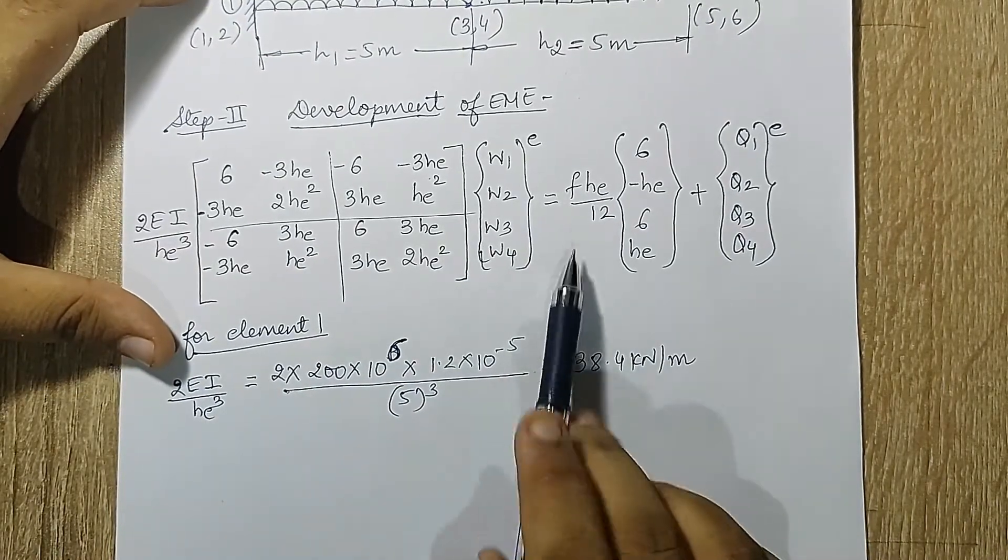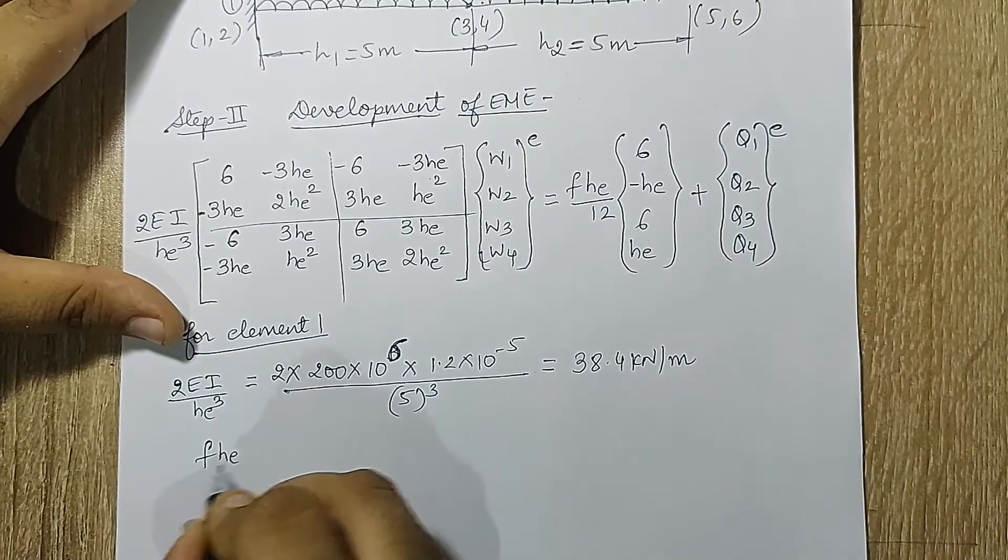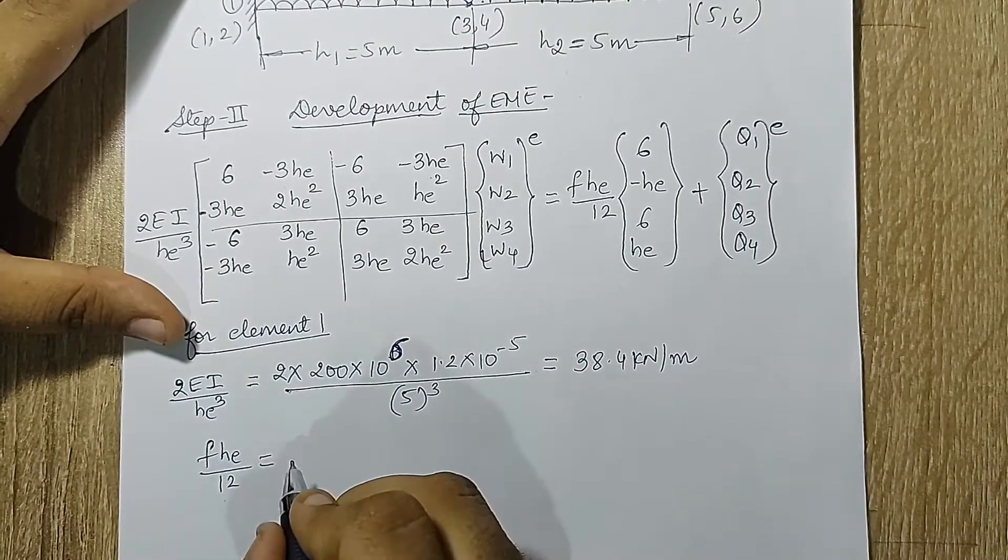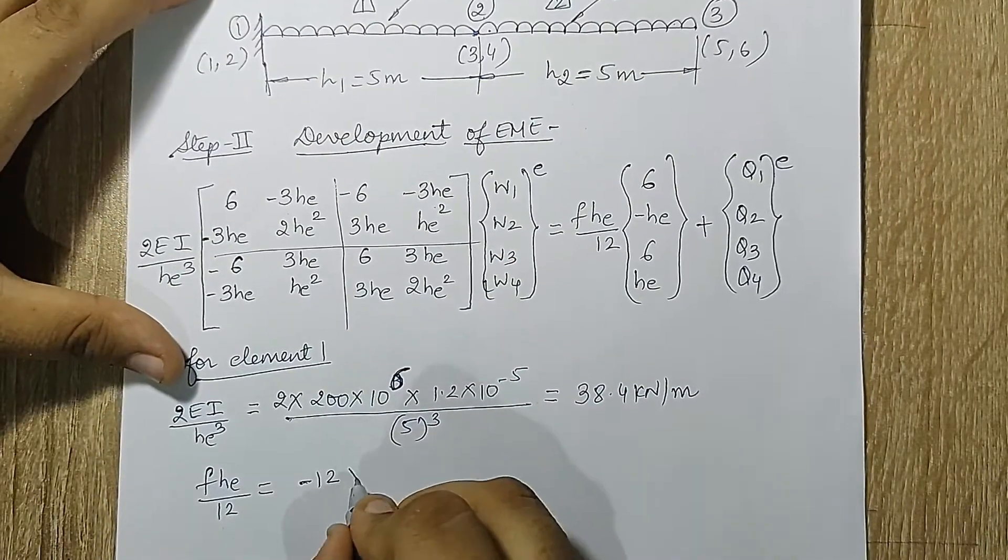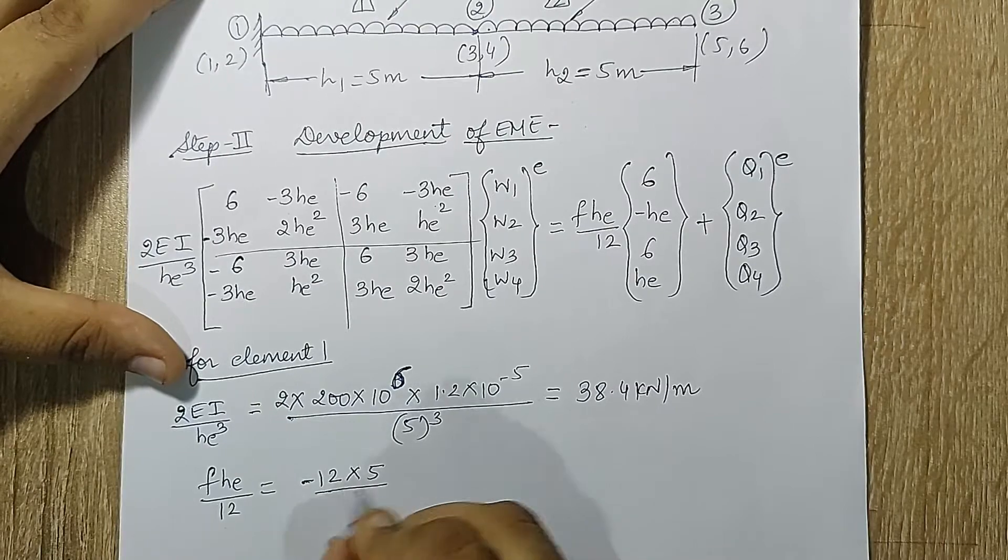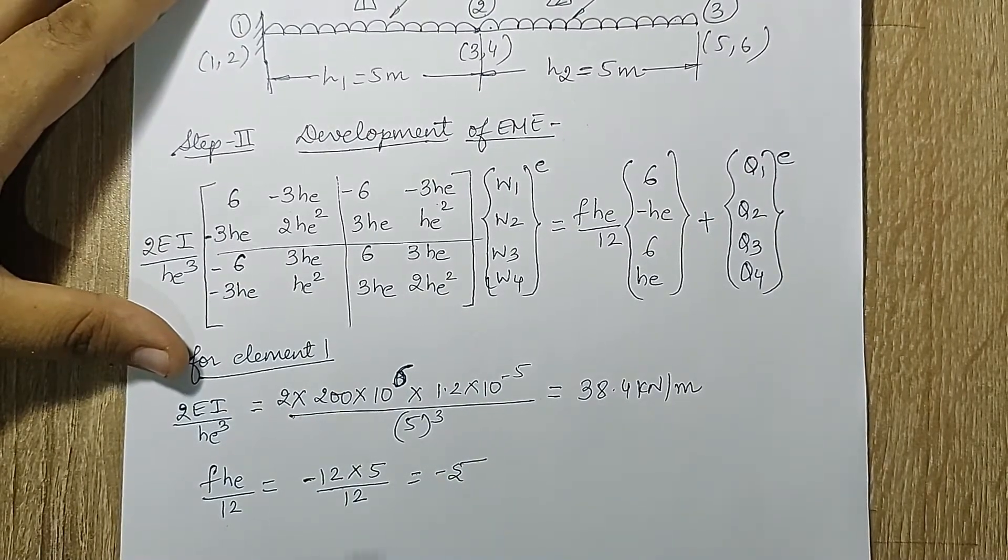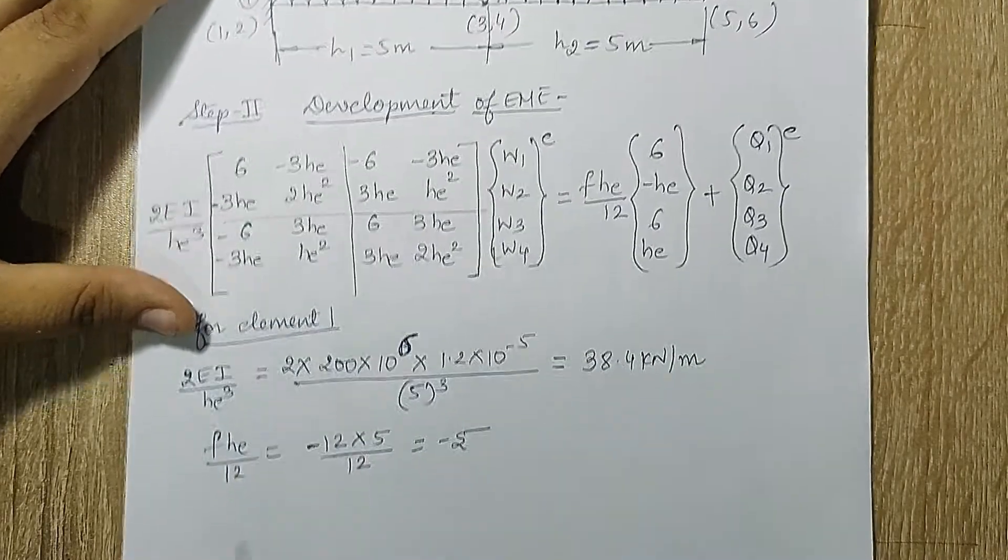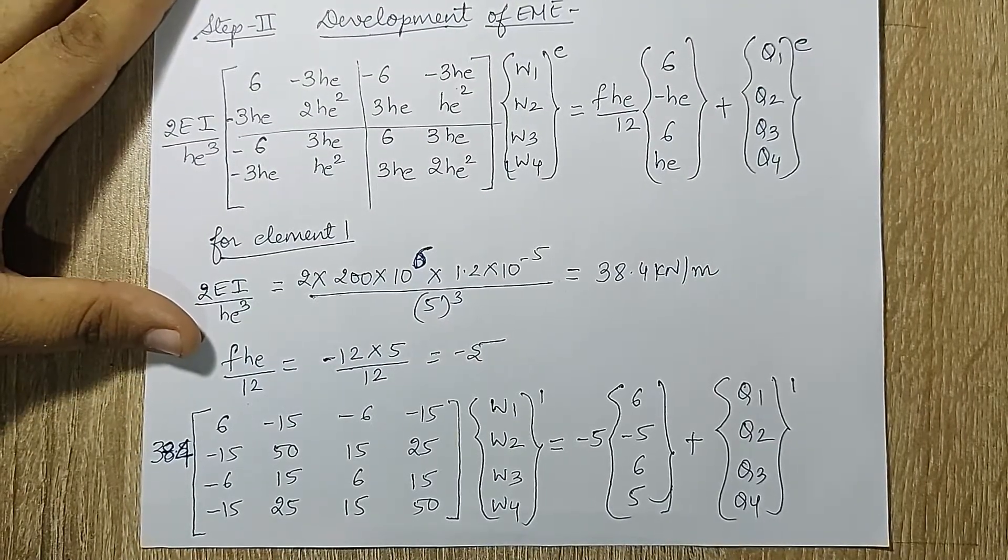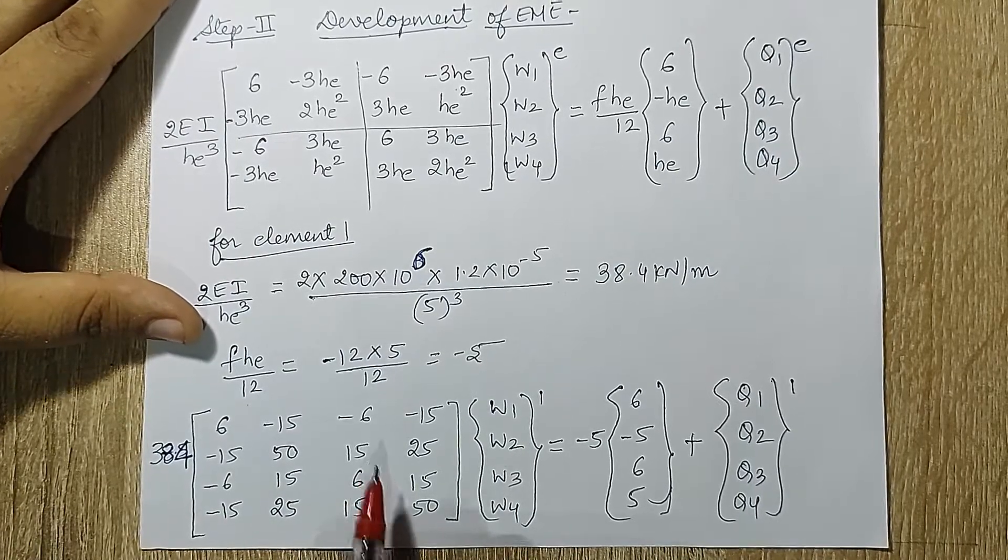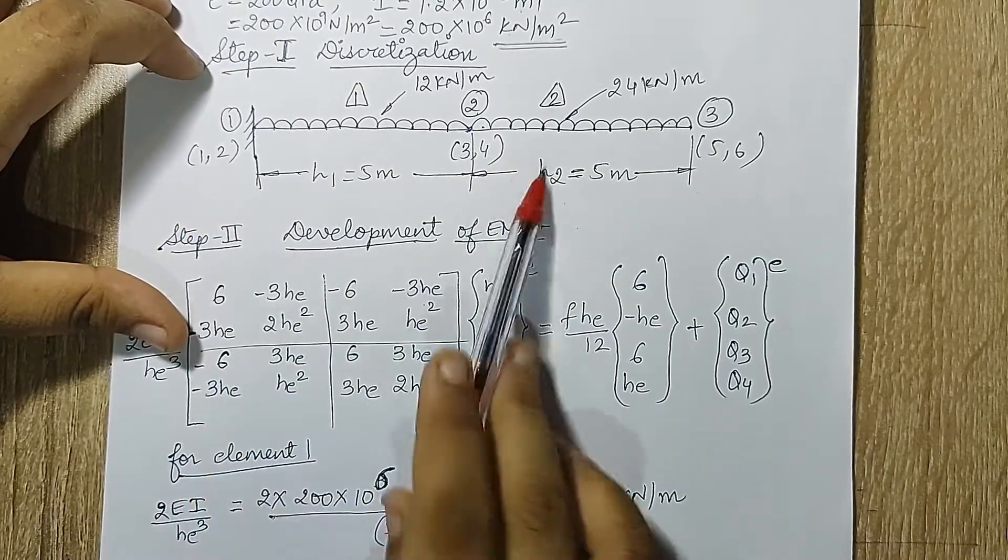So I will just change here, this is 200×10⁶. The value of I is 1.2×10⁻⁵. The value of h is 5 in terms of meter. When I solve this I get 38.4 kN per meter as the value. And also I need to calculate Fh/12. The value of F is given as 12 in the downward direction. So I will write here minus 12 into the value of h is 5 upon 12. So this makes it minus 5.